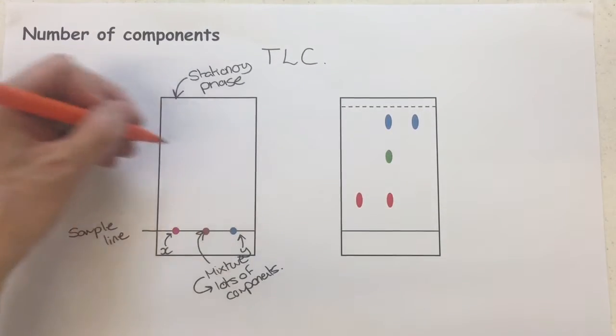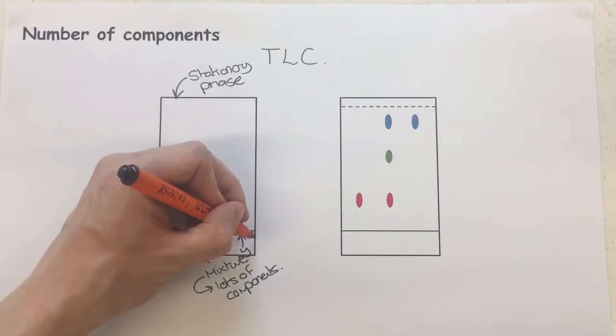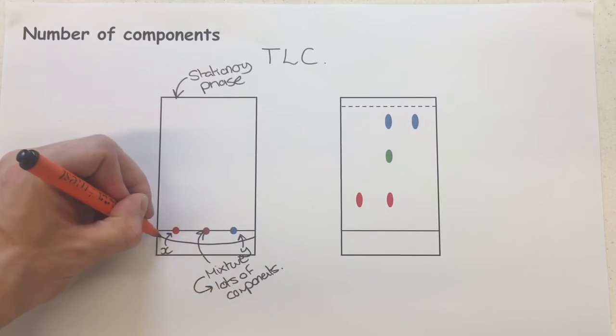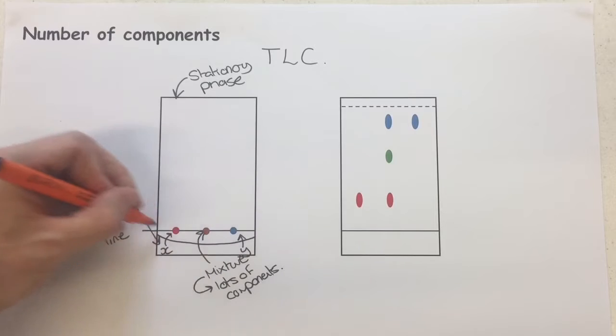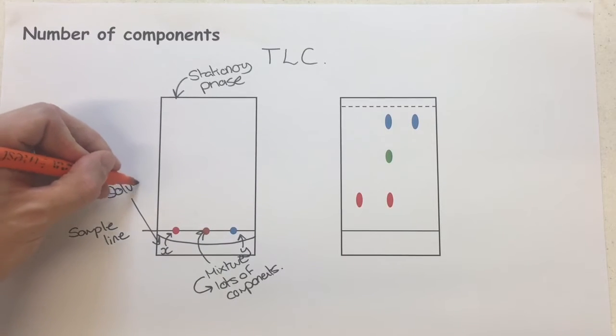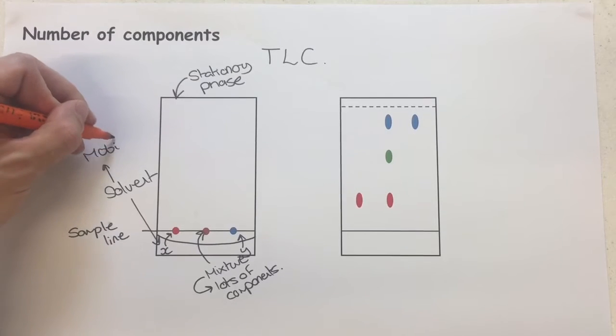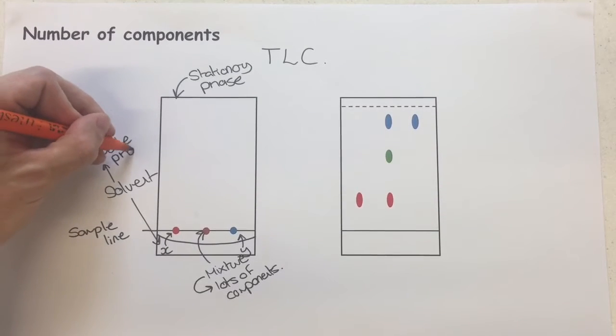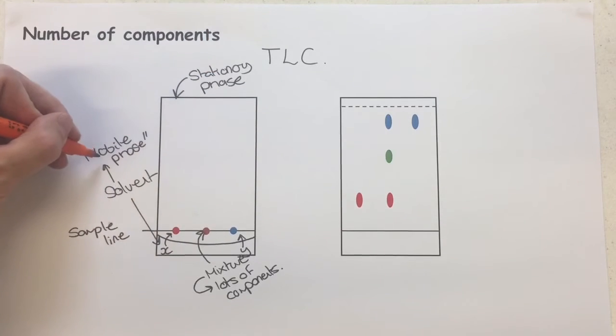This is what the whole start of this looks like before I add my solvent. Then I would add my solvent to this, and so I would dip this plate or paper into the solvent. The solvent is actually described as the mobile phase.